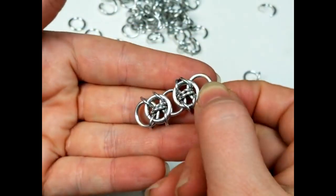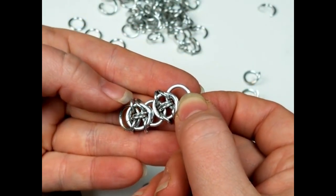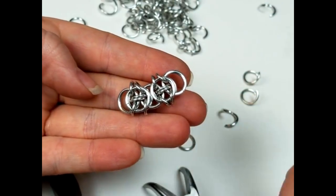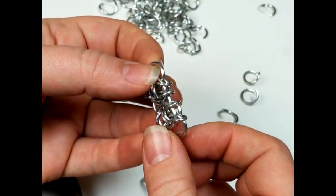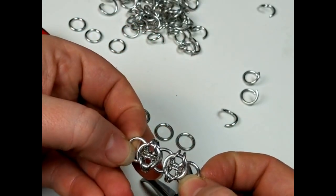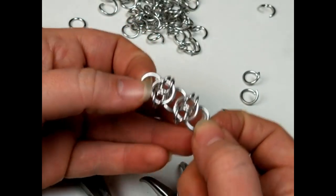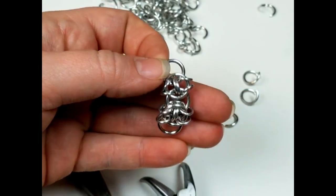But, yeah. That is the Celtic Visions weave. So, from there, we would just continue along. This loop on the end is perfect for attaching a clasp to. So, there we are.